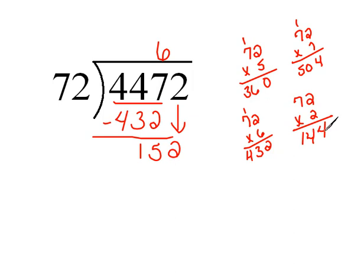So 144 would be 2 times 72. So I'm going to say, okay, it'll go in there 2 times, keeping it nice and lined up on top of that last digit.